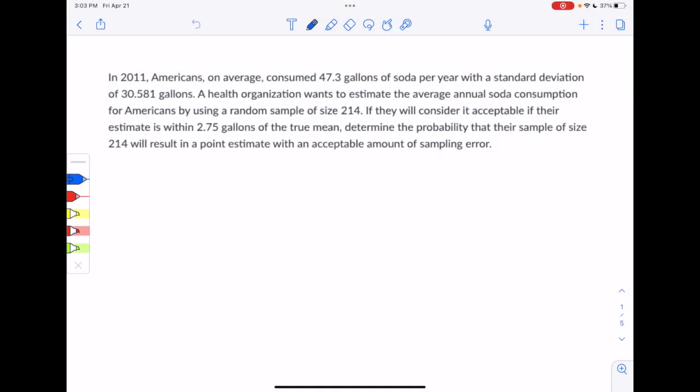Hello, Matt Davis here with more quiz help. This one is from the review quiz for Chapter 7. In 2011, Americans on average consumed 47.3 gallons of soda per year with a standard deviation of 30.581 gallons. A health organization wants to estimate the average annual soda consumption for Americans by using a random sample of size 214. If they will consider it acceptable if their estimate is within 2.75 gallons of the true mean, determine the probability that their sample of size 214 will result in a point estimate with an acceptable amount of sampling error.